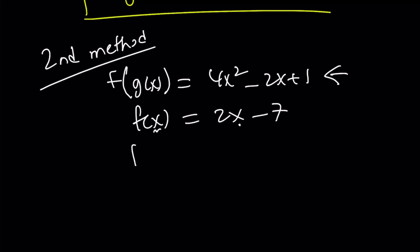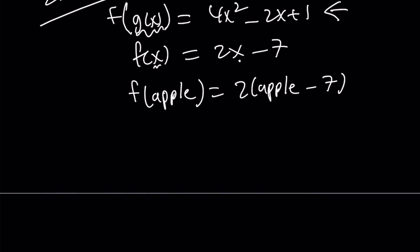So if you have f of apple, this is going to be 2 times apple minus 7. Right? What do we have instead of apple? We have g of x. So f of g of x by definition is going to be 2 times g of x minus 7.